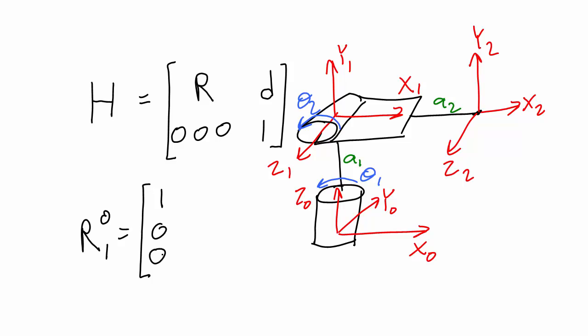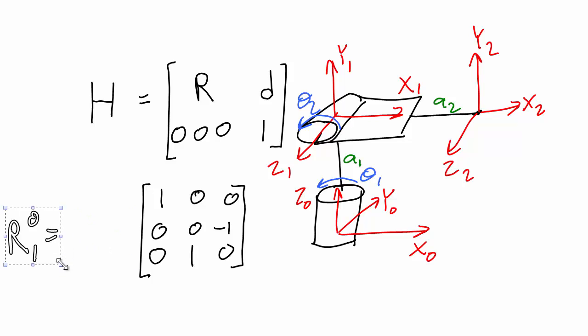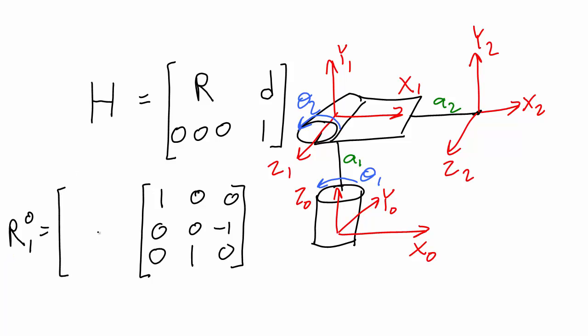Here I'm skipping the part where we go and get the x matrix and plug in 90 degrees, and going right to the part where we evaluate the matrix to plug in the zeros and ones for the sines and cosines of 90 degrees. After we've written this rotation matrix, which shows how to get the 0 frame to match the 1 frame, we also need to account for the theta 1 joint variable. The way that we do this is by placing a rotation around z on the left.